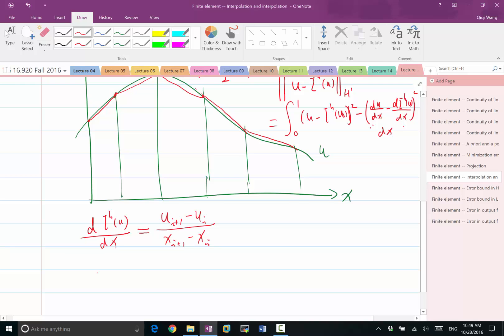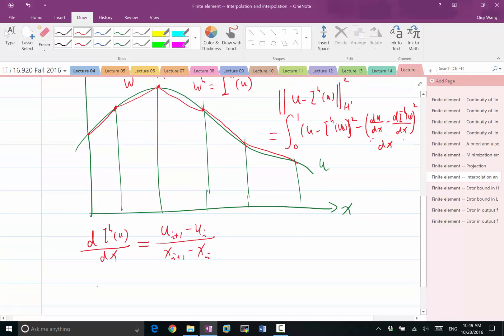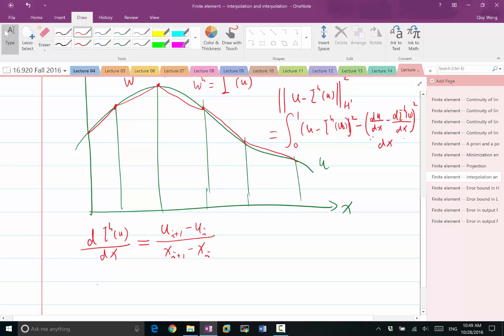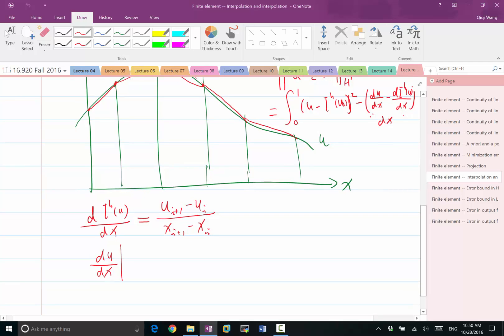Now what we need to do is, we need to use what's called the mean value theorem. It basically says that because du/dx averages to this number, the value of du/dx has to have a particular point that is equal to that number. So du/dx at a particular C has to be exactly equal to this number here.